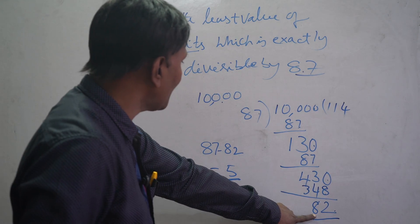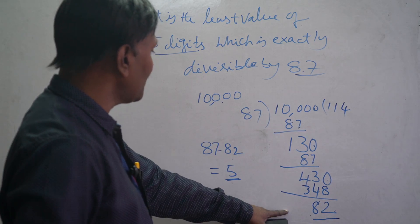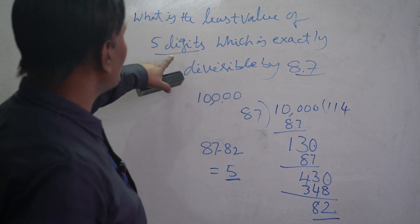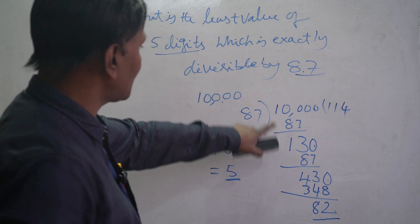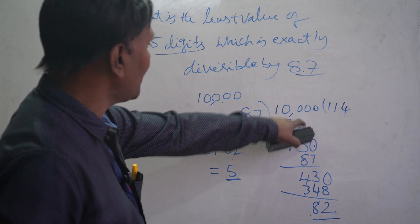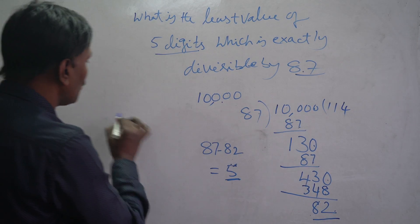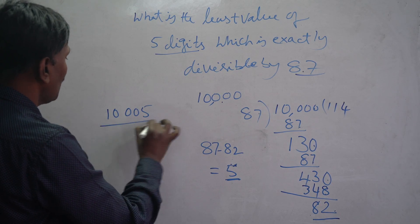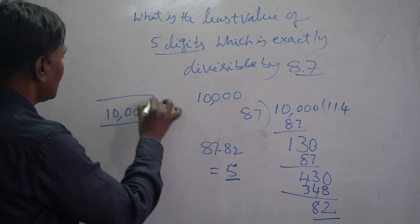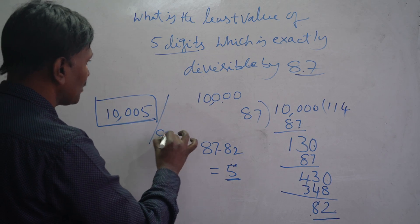If we add 5 to this number, it will become exactly divisible by 87. What is the least value of 5 digits which is exactly divisible by 87? We have to add this number to 10,000. It means 10,005, which is exactly divisible by 87.